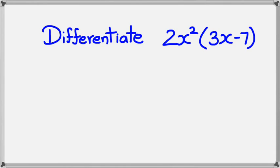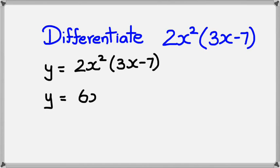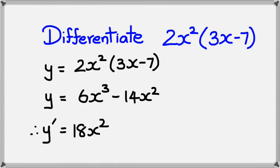Now in this example, I want to differentiate 2x² multiplied by 3x minus 7. Normally what we would do is we would expand the brackets out and make it into one simple function that we can differentiate. So if we expand this, we will get 6x³ minus 14x². And now if we differentiate it, we would get 18x² minus 28x.